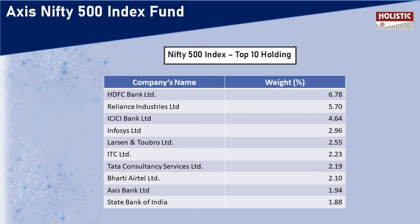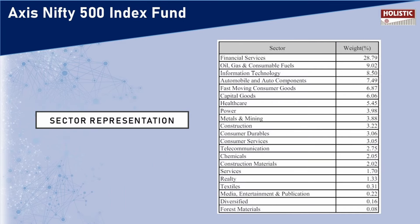The top 10 holdings under the Nifty 500 Index are: HDFC Bank Limited, Reliance Industries Limited, ICICI Bank Limited, Infosys Limited, Larsen and Toubro Limited, ITC Limited, Tata Consultancy Services Limited, Bharti Airtel Limited, Axis Bank Limited, and State Bank of India. The highest weight is given to HDFC Bank at 6.78%, and the lowest to State Bank of India at 1.88%.